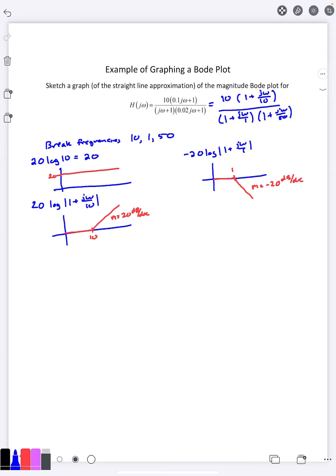And the last one, which is also in the denominator, minus 20 log of 1 plus j omega over 50. This time my break frequency is over at 50 here, starts out flat and then goes down.